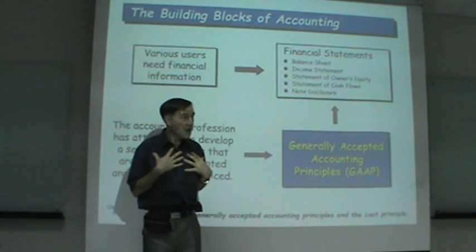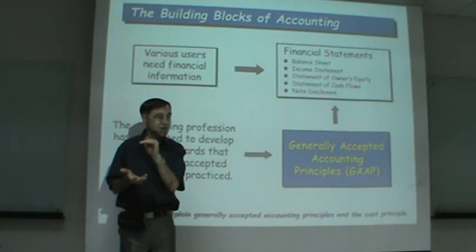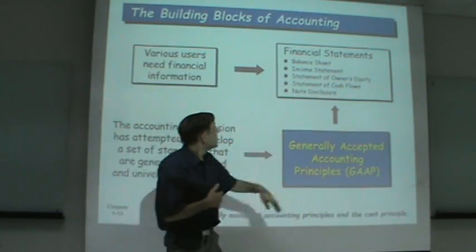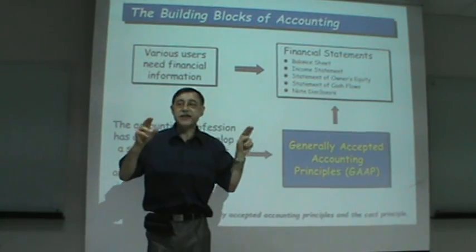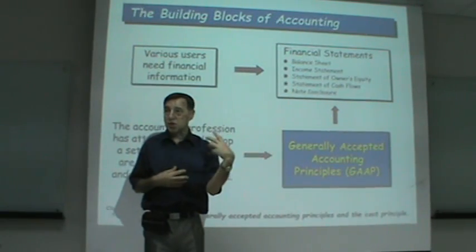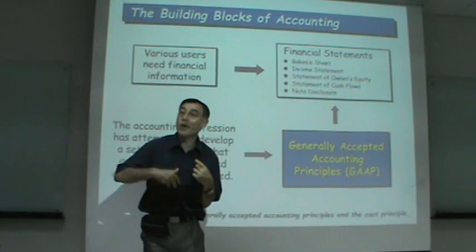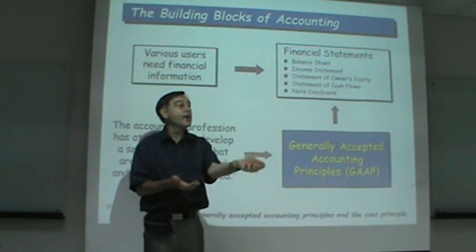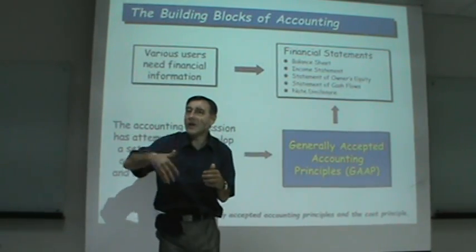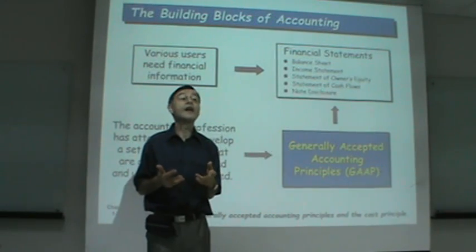The next statement is the income statement. Income is the same as profit. An income statement is about revenue — money coming into the business — and expenses, which is money going out of the business. The difference between money coming in and money going out is called income. When you subtract all expenses, that is called net income, and net income is the same as profit.